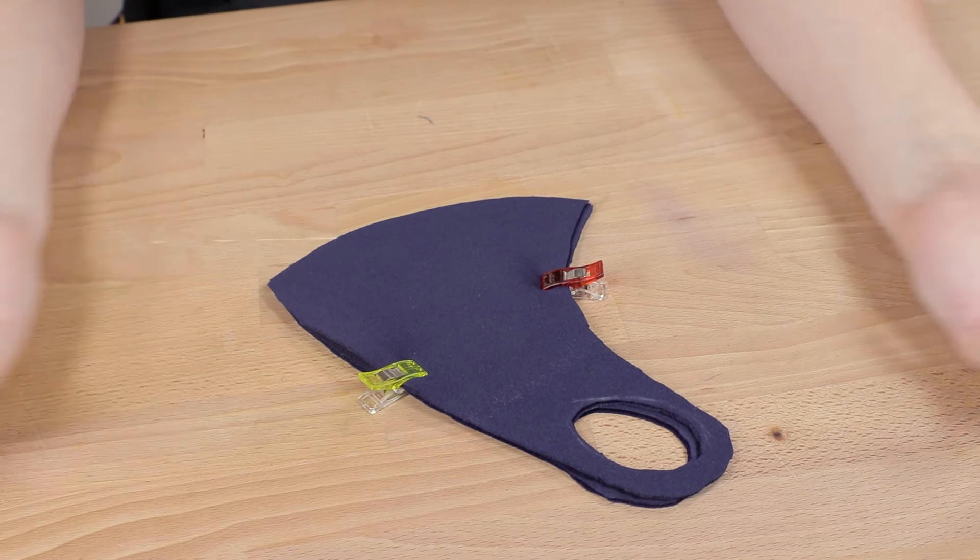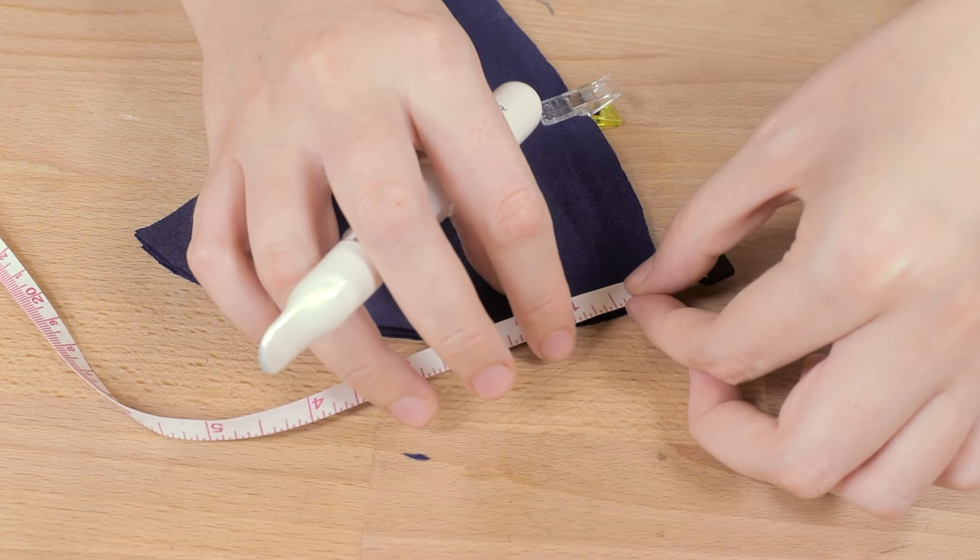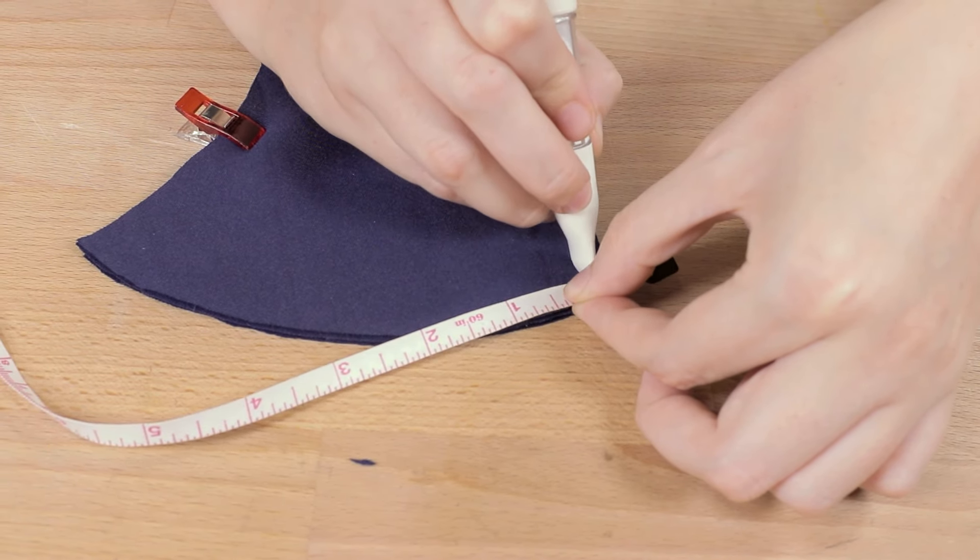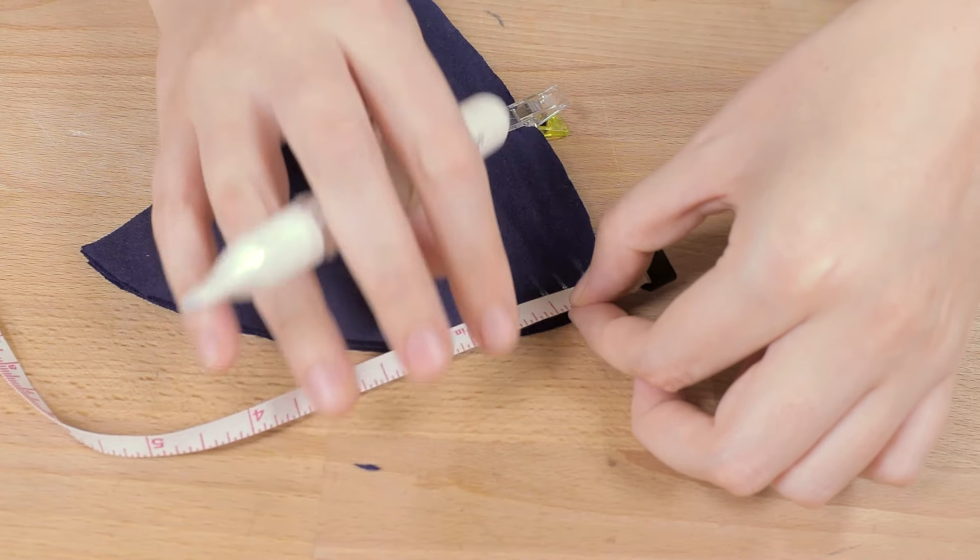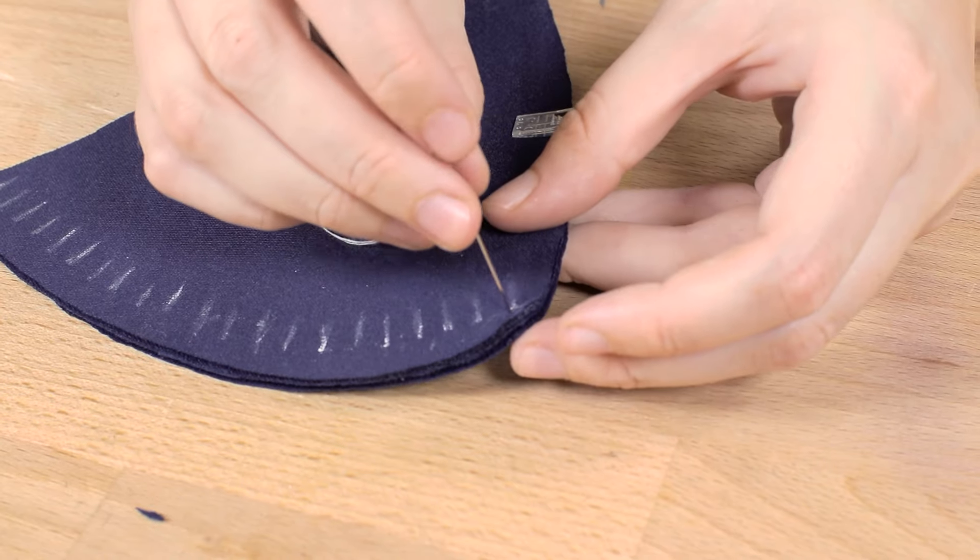To sew an overlock stitch you will want to match up the edges of your fabric. When you're starting out, you may want to mark out every eighth of an inch so you're making sure that the stitches are even. Thread your needle and tie off the ends.